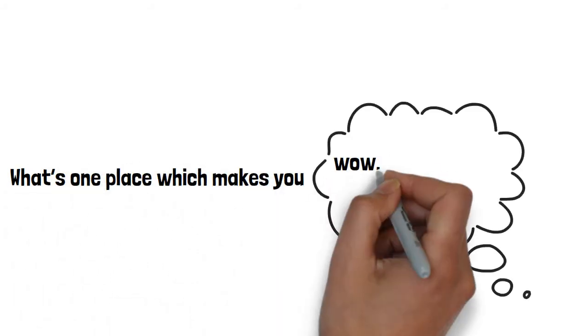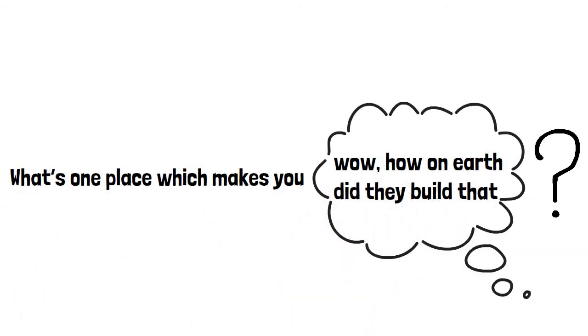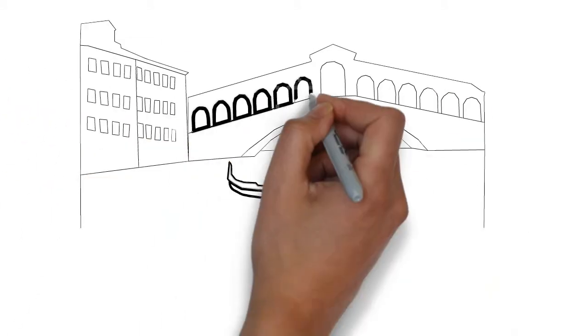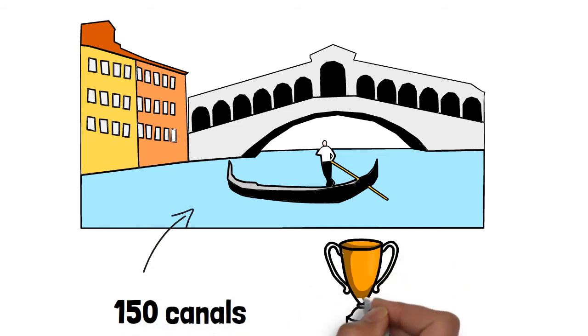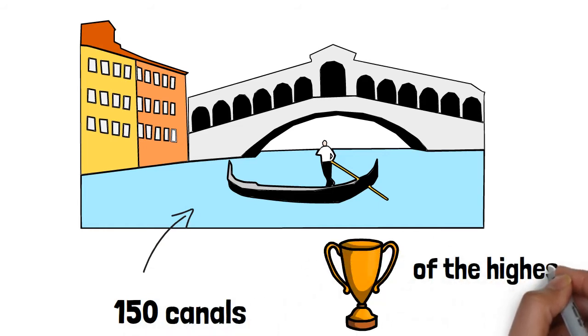What's one place which makes you think, wow, how on earth did they build that? One place that would be hard to argue with its inclusion would be the city of Venice. With its 150 canals, it's a city whose very existence is an achievement of the highest order.